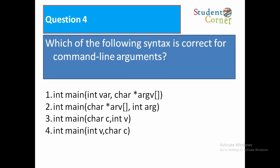Question number 4. Which of the following syntax is correct for command line arguments? Int main int var comma character star argv of array, option 2 int main character star argv of array, option 3 int main character, option 4 int main int v comma character c. The answer is 1. Int main int var comma character star argv of array.